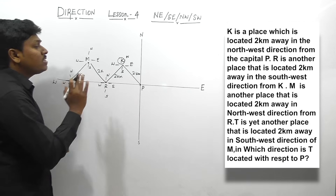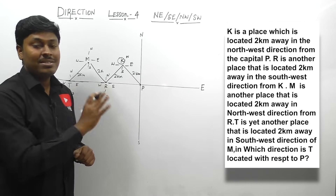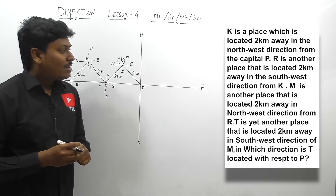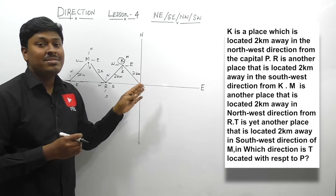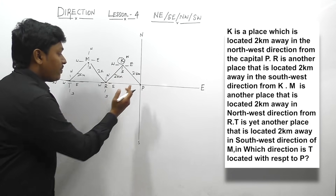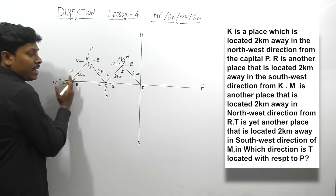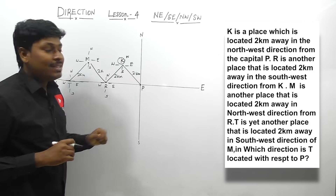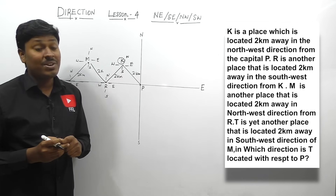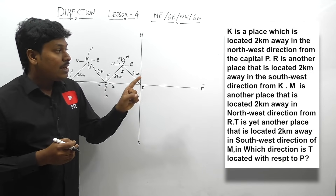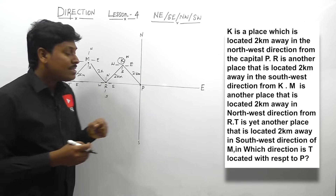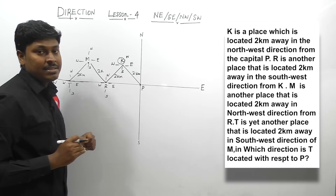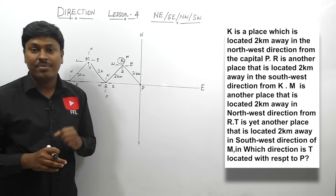Interesting question! If you know this question, then you will be strong on lesson number 4. The question is: in which direction is T located from P? From P, we need to see in which direction T is located. From P, if I see T, it is located in the west direction. So the answer for question number 3 is west.